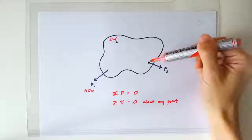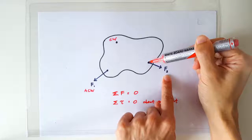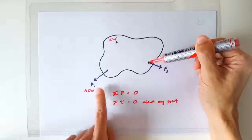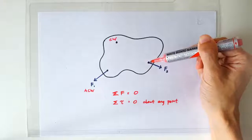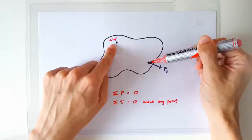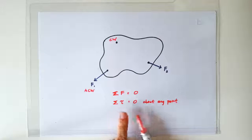If you consider moments about this point, then F2 is going to produce zero moment about this point. F1 is going to produce an anticlockwise moment, so all we can say is F3 is going to produce a clockwise moment in order for the net moment to be zero.